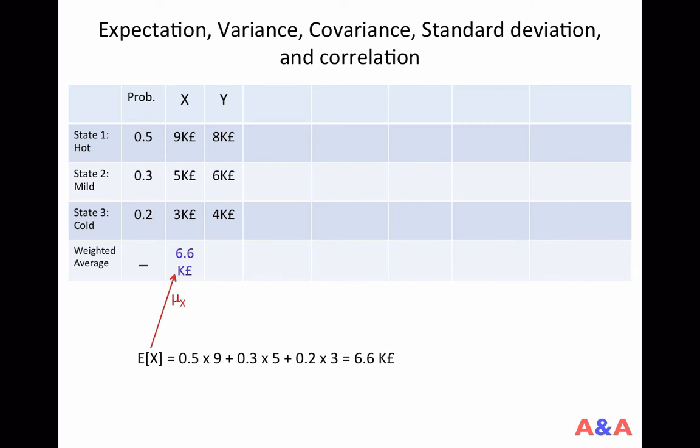The expected value or the expectation of X is denoted by E[X], which is given by this expression. Basically, it is the weighted average of these possible outcomes where the weights are the probabilities.